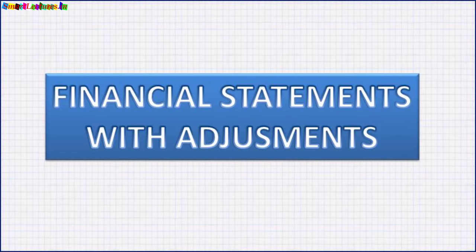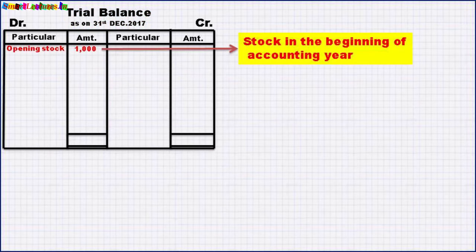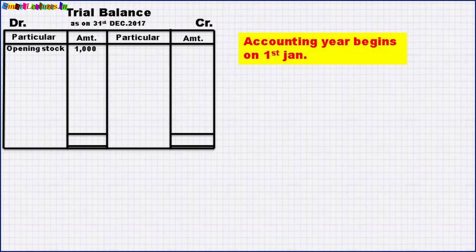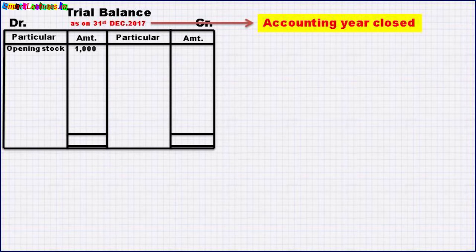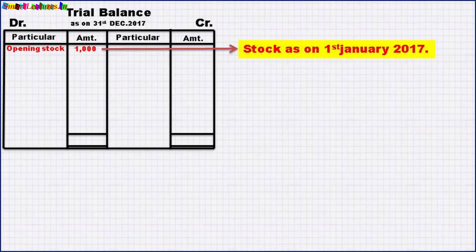Let us take one more question. This is the trial balance as on 31st December 2017. Opening stock as on 1st January 2017 is 1000. Opening stock means the stock in the beginning of this accounting year. Our books are closed on 31st December 2017, meaning our accounting year begins on 1st January and ends on 31st December. In some countries and firms, the accounting year starts on 1st April and ends on 31st March. In our question, the accounting year is 1st January to 31st December, so opening stock as on 1st January 2017 is 1000.